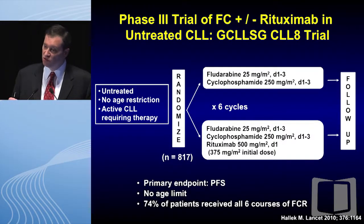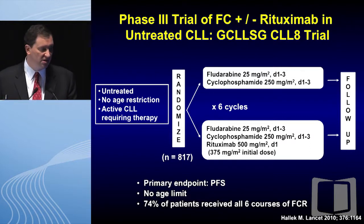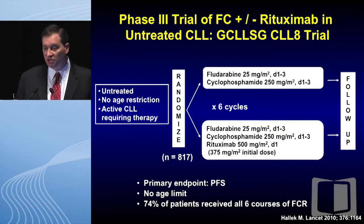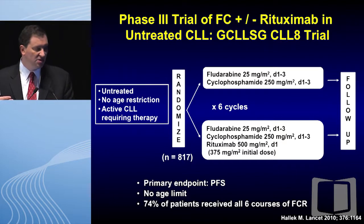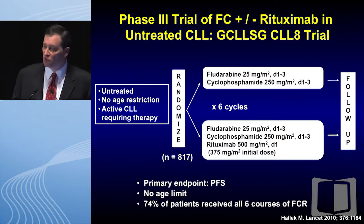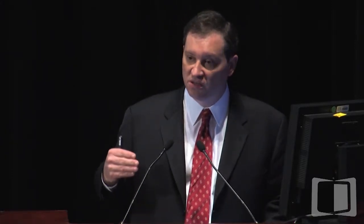Looking at the German CLL Study Group CLL8 study — the same group doing a different study — this compared FC versus FCR. I'll speak primarily to the FCR data. The dose was fludarabine 25 mg/m² days one through three, cyclophosphamide 250 mg/m² days one through three, and rituximab 375 mg/m² cycle one followed by 500 mg/m² cycles two through six. There was no age limit, the primary endpoint was progression-free survival, and 74% of patients received all six courses of FCR chemotherapy.